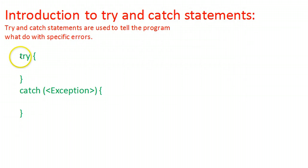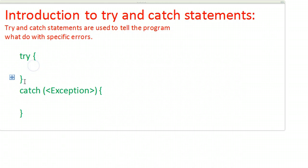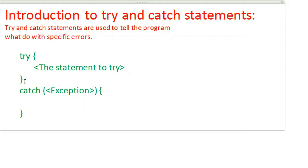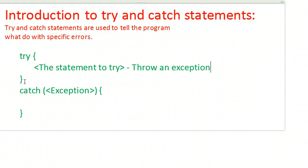It always starts with the word try and we open a brace and create a code block. Inside this code block is where we put the statement to try. This can be multiple statements, but essentially there's going to be a statement somewhere which could cause an error. So what we say is when an error occurs, it will throw an exception. When some sort of error occurs, the program throws an exception that we need to deal with.